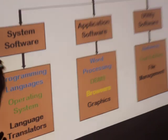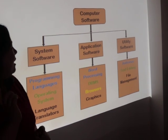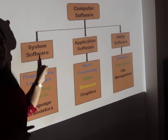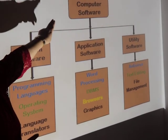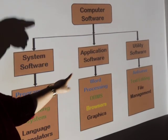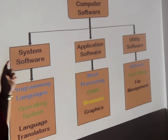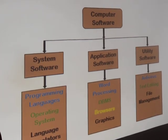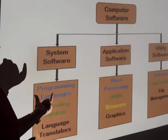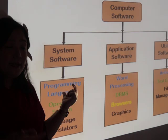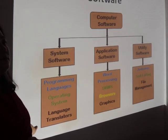Computer software is a collection of programs that has been designed to perform a well-defined function. Basically, computer software is a sequence of instructions given to the computer to perform a specific task. This computer software can be further divided into three parts — system software, application software, and utility software. First, we will study system software, which is basically designed to operate, extend, or enhance the processing capabilities of the system.